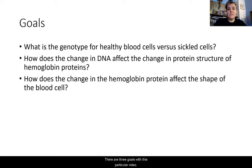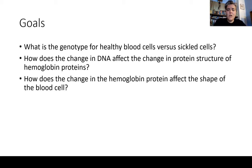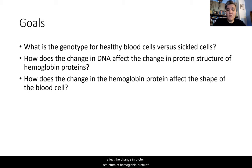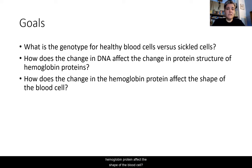There are three goals with this particular video. When we're done, we should be able to answer these three questions: What is the genotype for healthy blood cells versus sickled cells? How does the change in DNA affect the change in protein structure of hemoglobin proteins? And how does the change in the hemoglobin protein affect the shape of the blood cell?